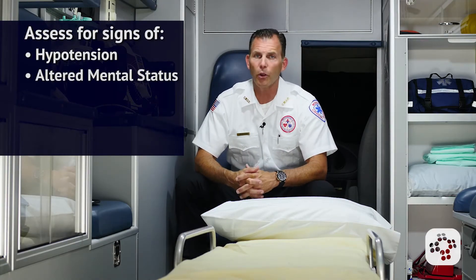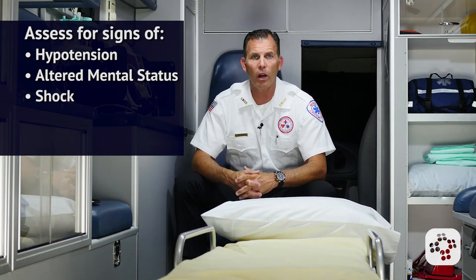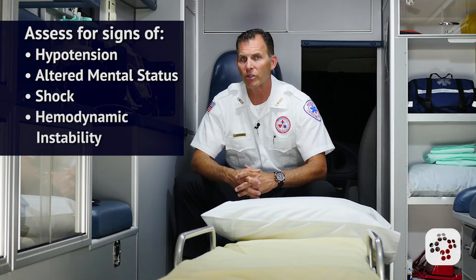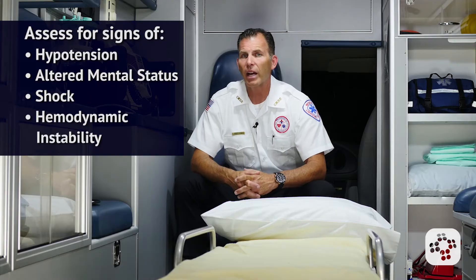For a tachycardic child with a pulse, assess for signs of hypotension, altered mental status, shock, or other life-threatening hemodynamic instabilities. If any of these signs of cardiac compromise are evident, the initial management includes supporting the airway, breathing, and circulation, providing oxygen as needed, obtaining vital signs including blood pressure and pulse oximetry, ECG monitoring or attaching defibrillator pads, and establishing vascular access.